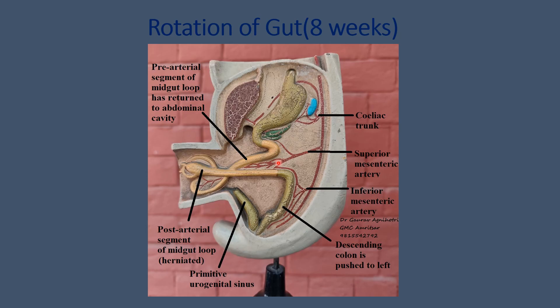So we have the stage of rotation of gut at 8 weeks, when the pre-arterial segment has returned to the abdominal cavity while the post-arterial segment is herniating through the umbilical opening.